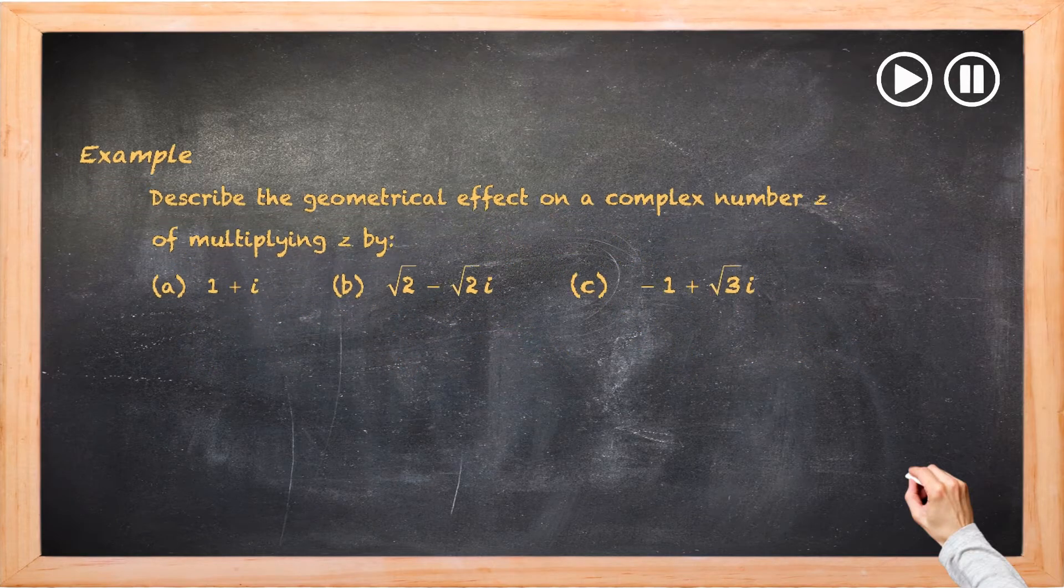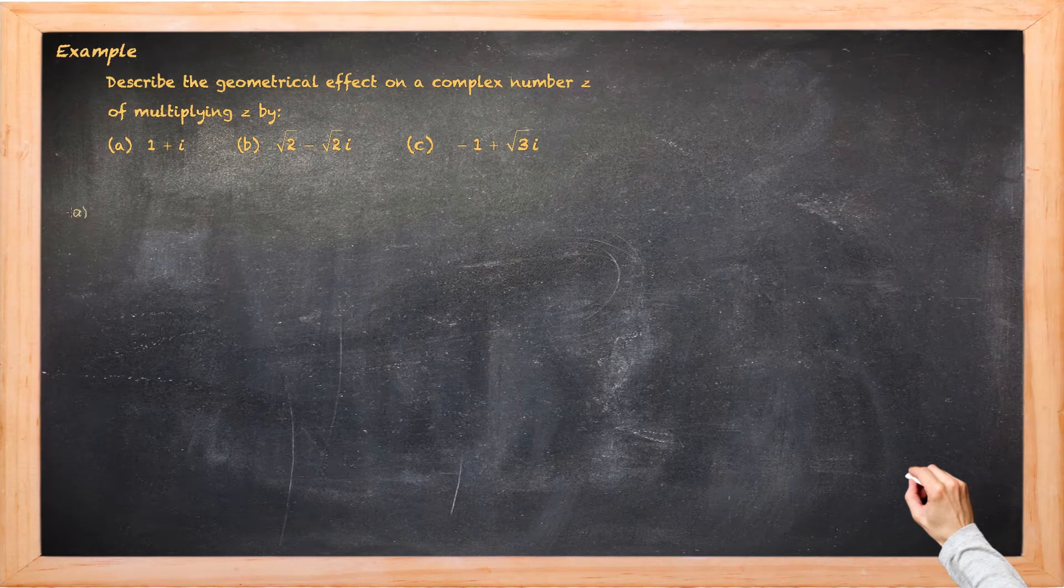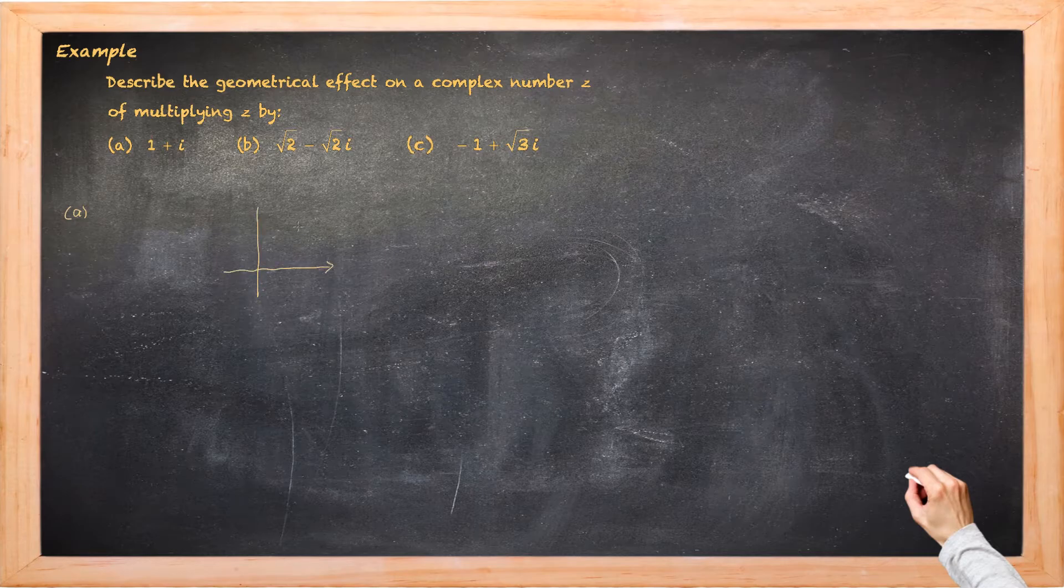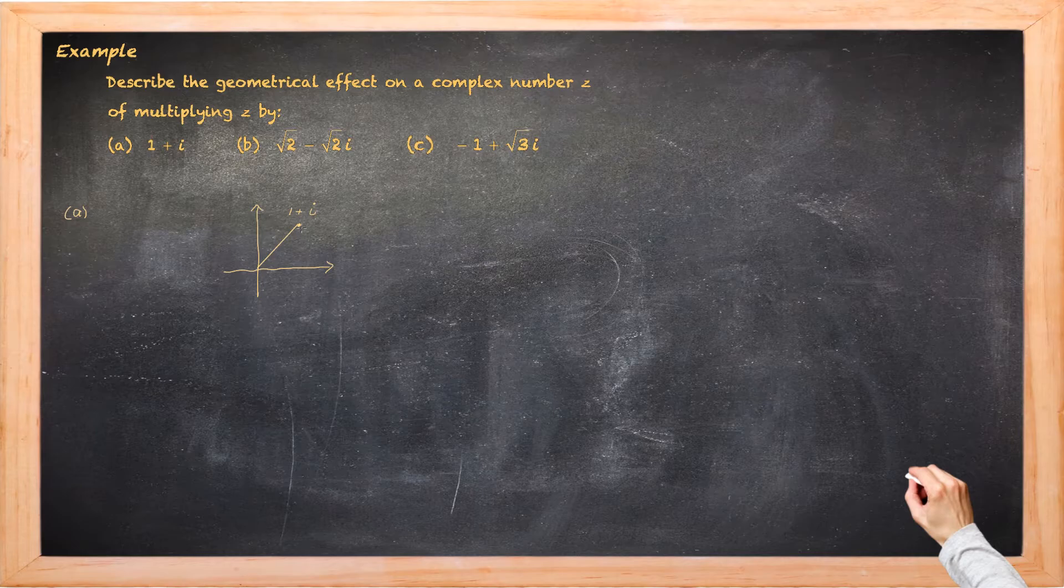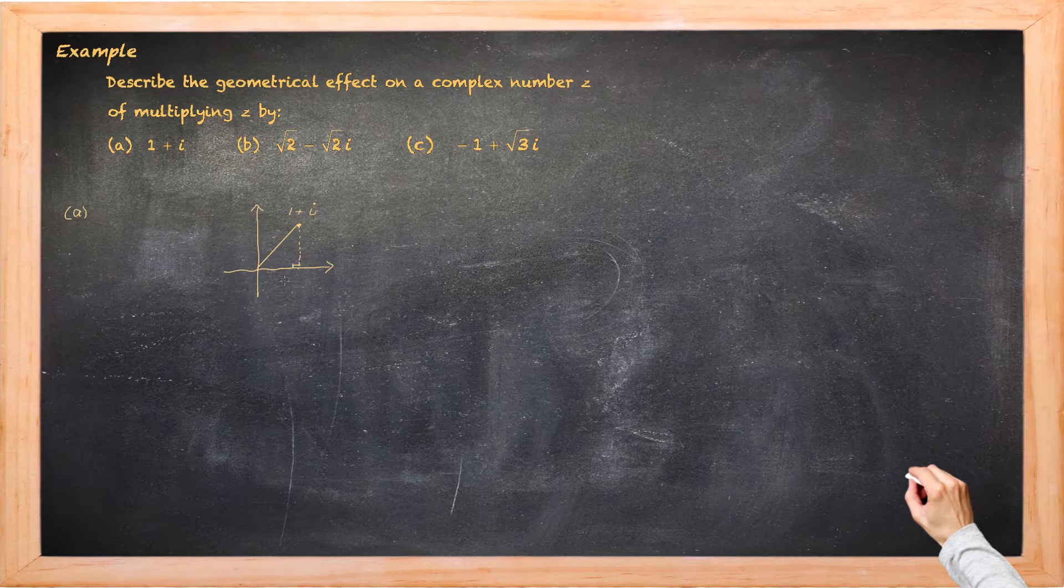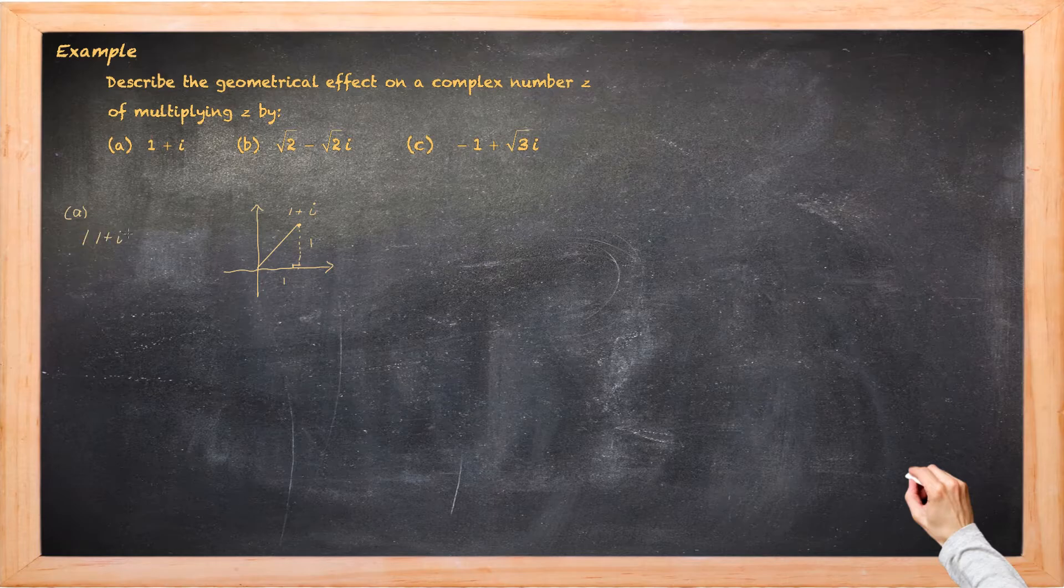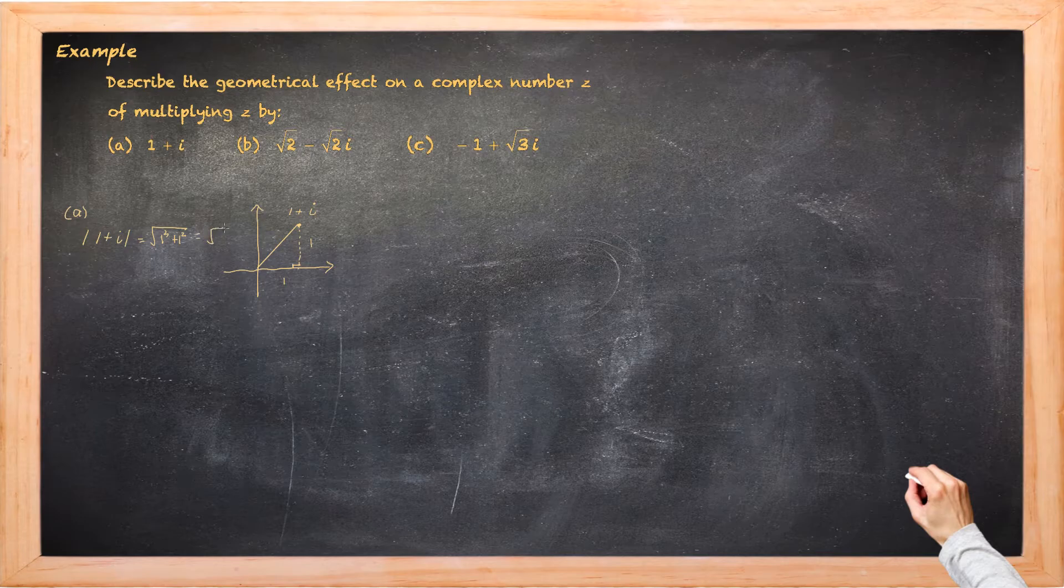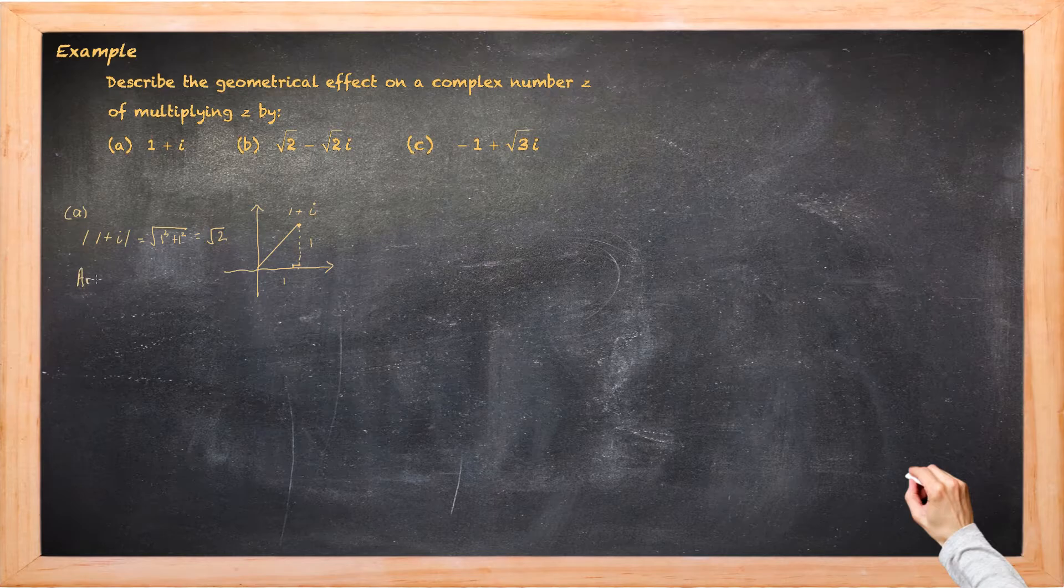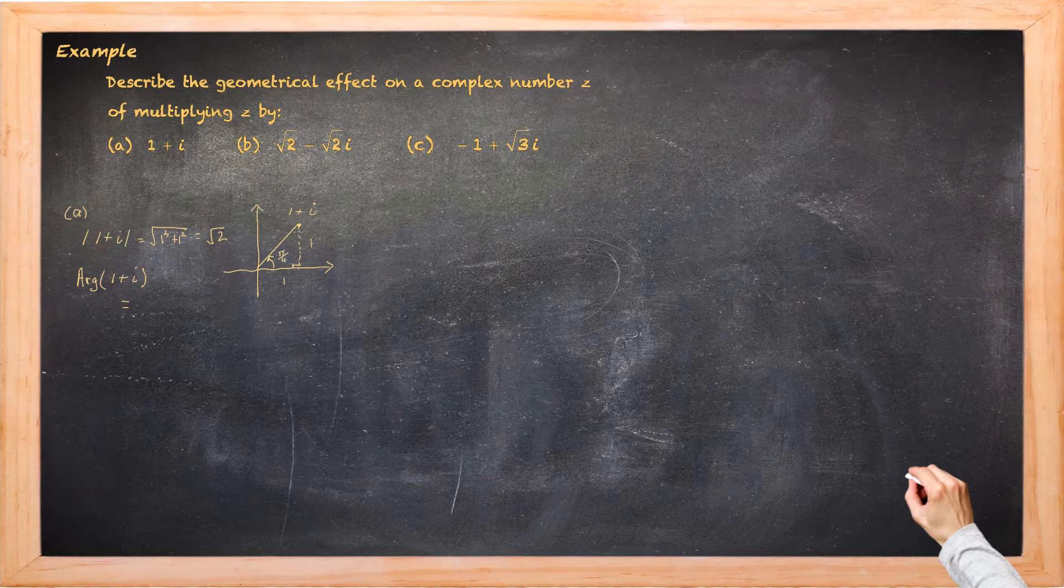So let's tackle part A of this question. 1 plus i. Let's locate it on an argand diagram. So it's one along and one up. And there's a right angle triangle. These two sides are length one. So let's look at the modulus of 1 plus i. Remember that's the square root of the real part squared plus the imaginary part squared. That's 1 squared plus 1 squared. Pythagoras's theorem in that right angle triangle gives us root 2. And the principal value of the argument of 1 plus i. Remember between negative pi and pi. Well from the argand diagram we can see it's pi upon 4.